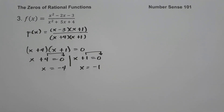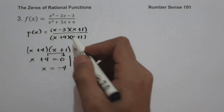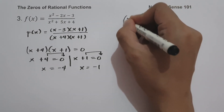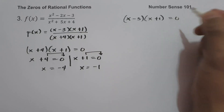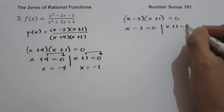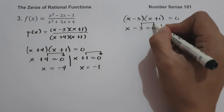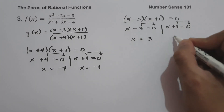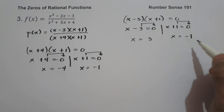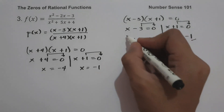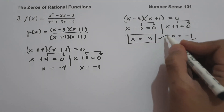Now we set the numerator equal to 0: x minus 3 times quantity x plus 1 equals 0. This gives x equals 3 and x equals negative 1. Since negative 1 is a restricted value, therefore the zero of the function is x equals 3. And this will be our answer.